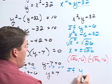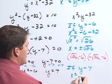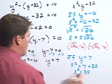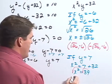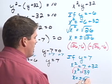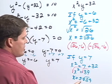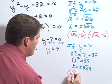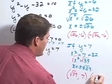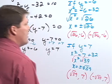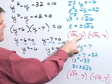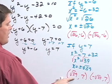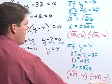For the other case, if y equals 7, then x squared equals 7 plus 32, so x squared equals 39. Taking the square root of both sides, x equals positive or negative square root of 39. This gives two more answers when y equals 7: square root of 39 comma 7, and negative square root of 39 comma 7. So in total I have four solutions: (√26, −6), (−√26, −6), (√39, 7), and (−√39, 7).